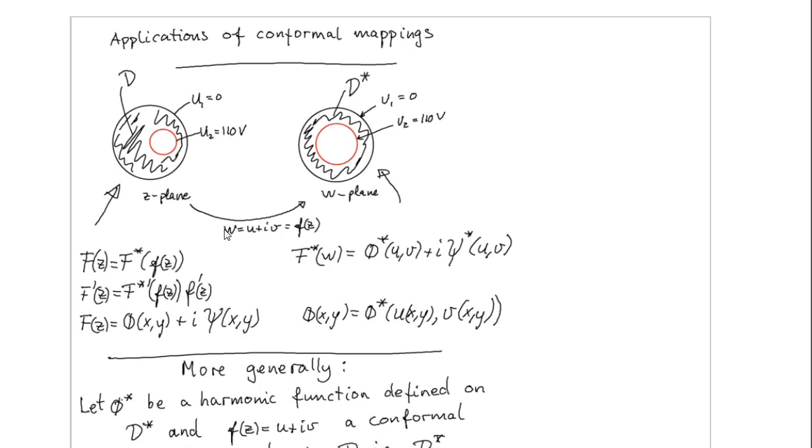And we have this conformal mapping which we call F of set. And F of set we put equal to W, and W has the real part U and the imaginary part V.